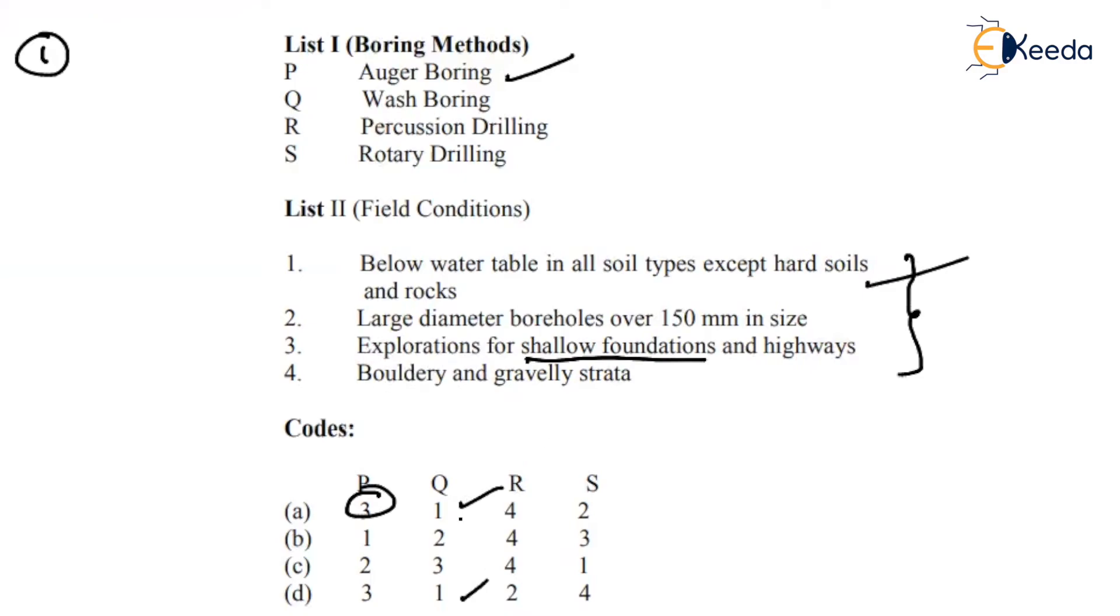Then what about percussion boring and rotary drilling? Rotary drilling, as we have seen, is used for rocky soils and hard rock soils. If you see bolder and gravelly strata, these also come under the category, so I can tell you S comes under four. So what is the correct option?